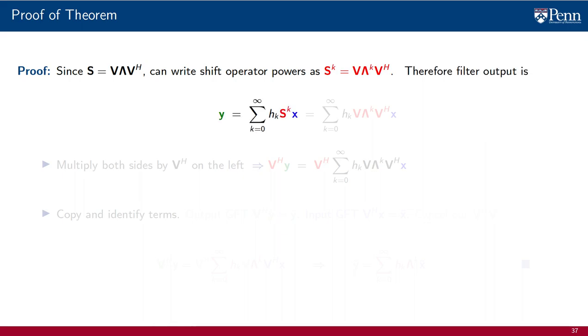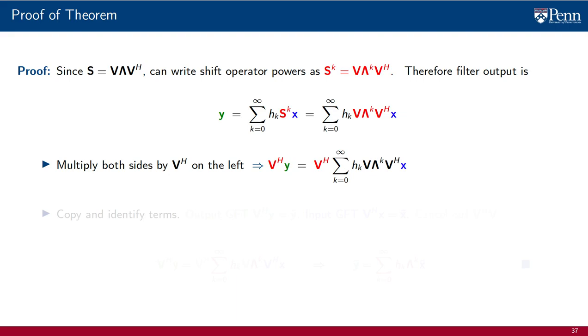Thus, the filter that we write here with its usual definition can be rewritten by replacing powers of s by these factors containing powers of lambda. Multiply now on the left by V Hermitian on both sides of the equality. Doing so yields some familiar terms. Let's copy the expressions so that we can identify them.